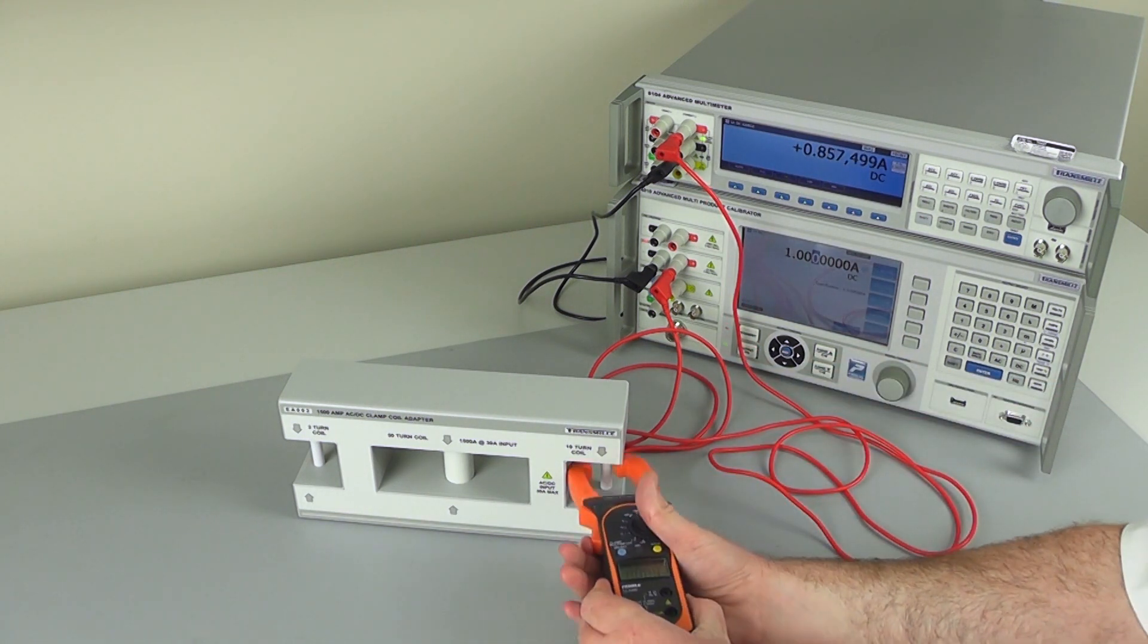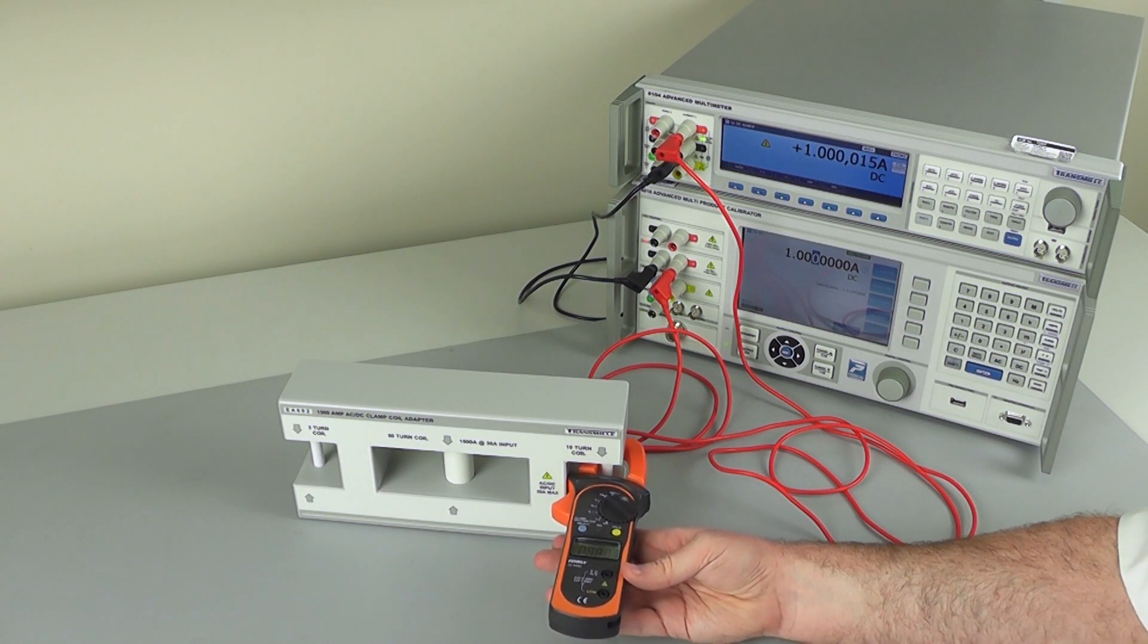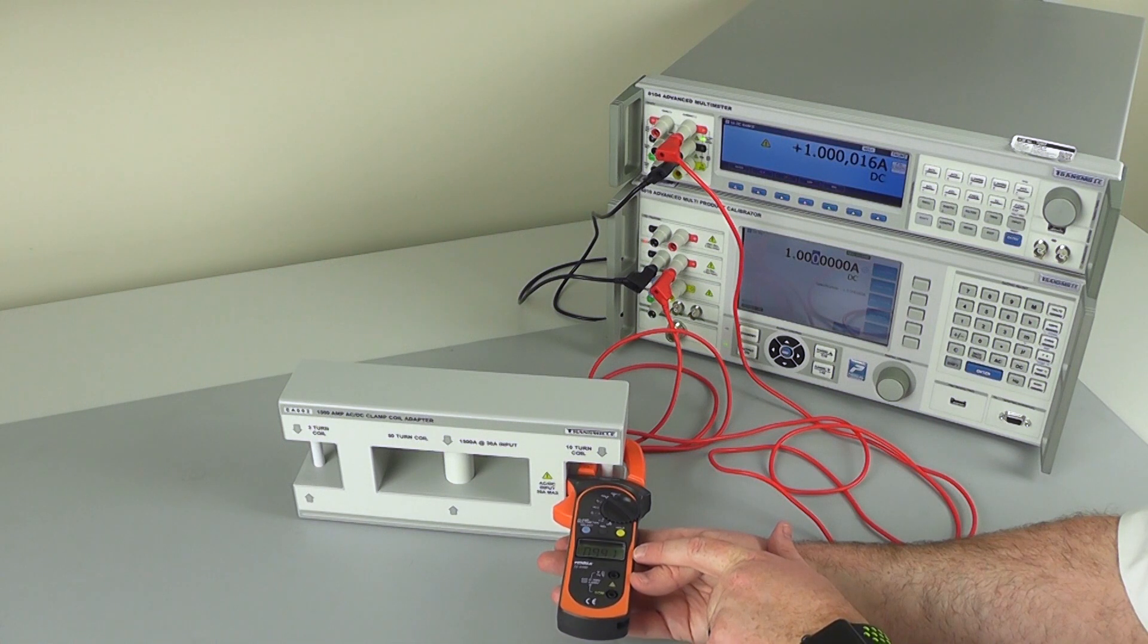Apply 1 amp and put my clamp meter around the 10 turn coil. As we can see, there's a slight error due to the alignment. However, we are measuring 10 amps.